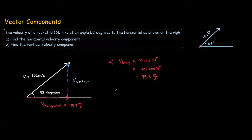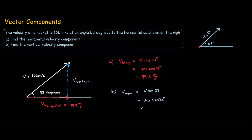Since sine is vertical and cosine is horizontal, the vertical component is 165 sin 53 degrees, which gives us 132 meters per second.